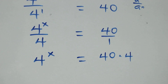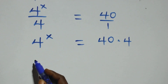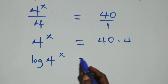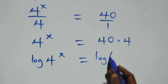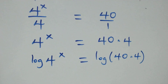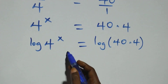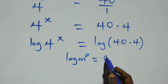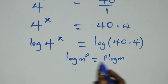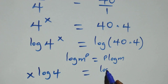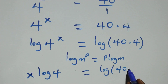The next step here, we take the log on both sides. We have log of 4 raised to power x equals to log of 40 times 4. Then here, we apply the power log rule. We have log m raised to power p, which is the same thing as p times log m.